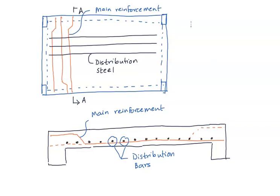This is the type of reinforcement detail seen in a one-way slab. Now in the next sketch, let us look at how the reinforcement will be arranged in a two-way slab. A two-way slab has a proportion where the length is less than twice the width.